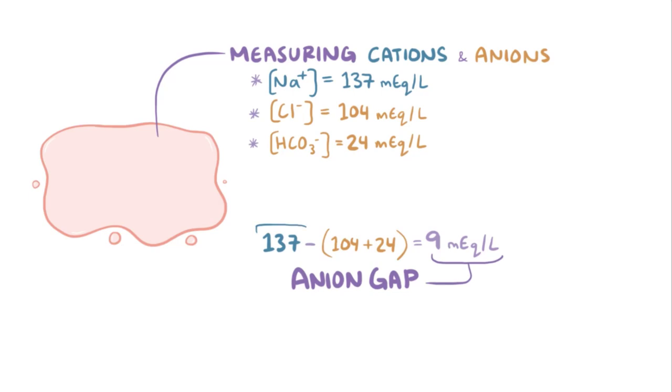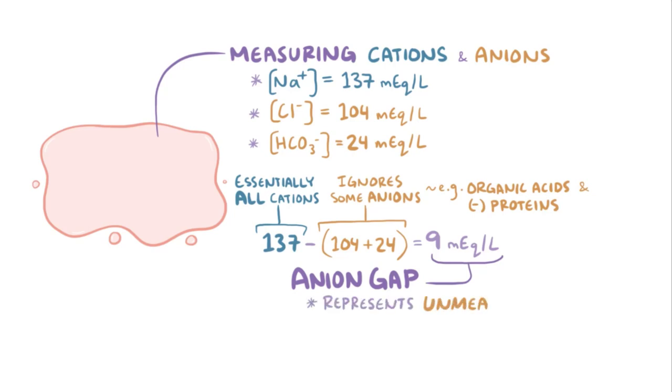It's because sodium accounts for the vast majority of cations in the plasma, but by measuring only chloride and bicarbonate, we're ignoring a bunch of anions, including the anion component of several organic acids and negatively charged plasma proteins, like albumin. In other words, this anion gap represents all these unmeasured, ignored negative charges out there, and normally ranges between 3 and 11 milliequivalents per liter.